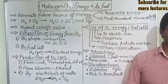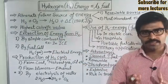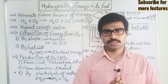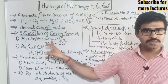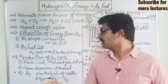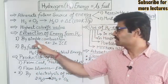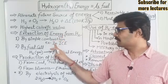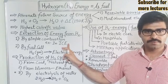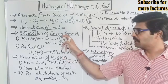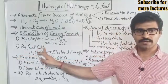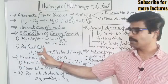Now the question is: how can we extract energy from hydrogen gas? Here we have two approaches. The first is by simple combustion — hydrogen fuel is directly burned. An example is the simple combustion of hydrogen gas in internal combustion engines, similar to how petrol and diesel engines work. In that way, hydrogen can be used as fuel.